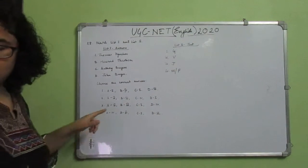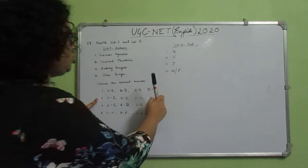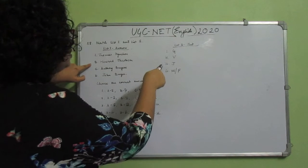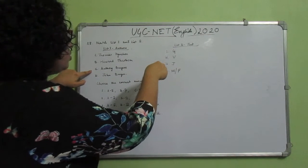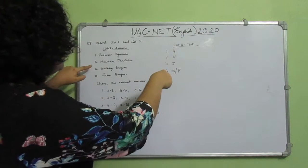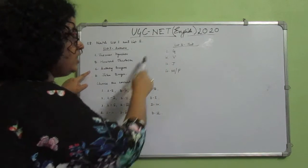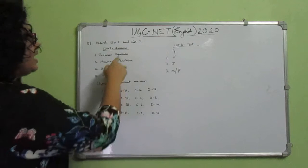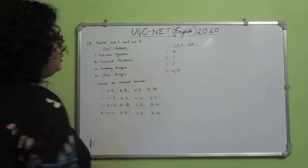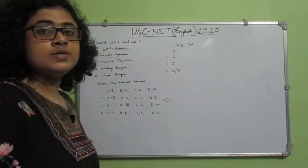The correct combination is option number 2. A2: Thomas Pynchon wrote V. B3: Howard Jacobson wrote J. C4: Anthony Burgess wrote M or F. D1: John Burgess wrote G. So A2, B3, C4, D1 — that is the correct combination. The correct answer is option number 2.